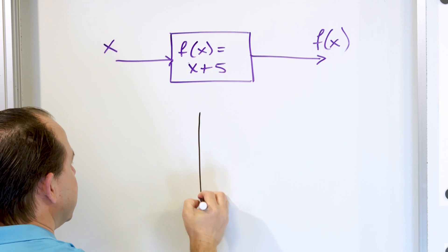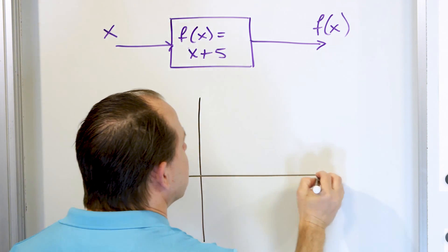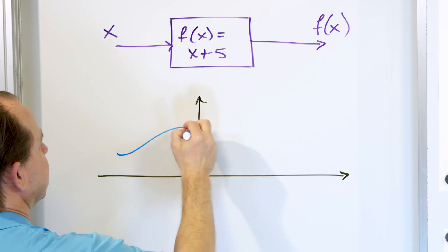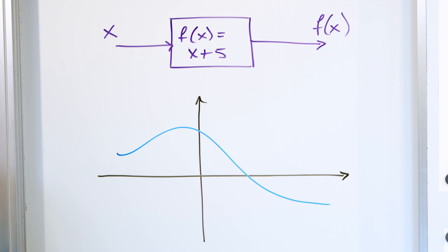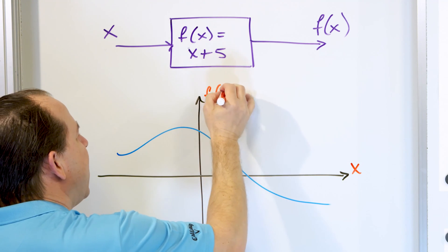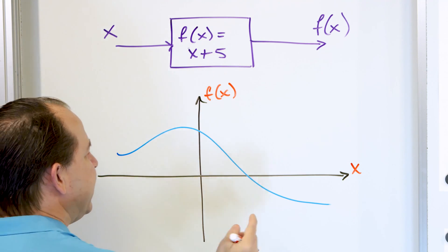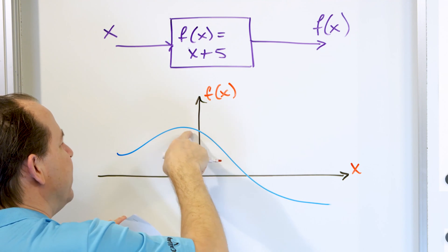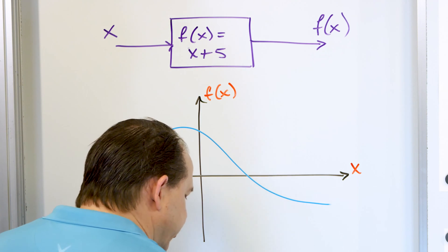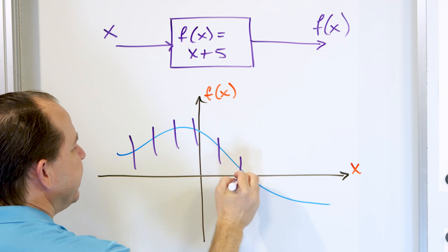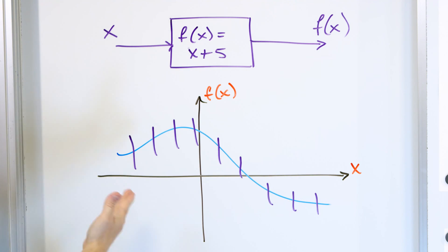If you remember from the last lesson, when we graph these things, let's say I have a function like this — here's a function. Is it a function or not? Well, the way you figure it out is you know that you have these inputs, which are called x values, and you have these outputs called f of x values. The input values come in, a calculation happens, and then an f of x value comes out — the output value. We learned that we can do the vertical line test, and if it only crosses in one place at every single place on this curve, then it's a function.